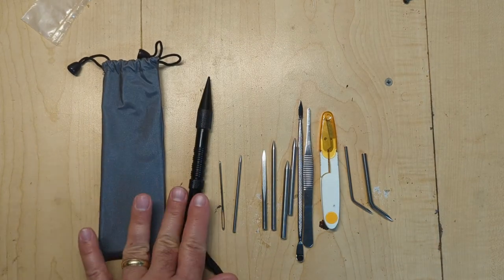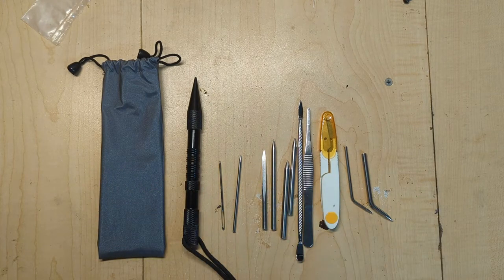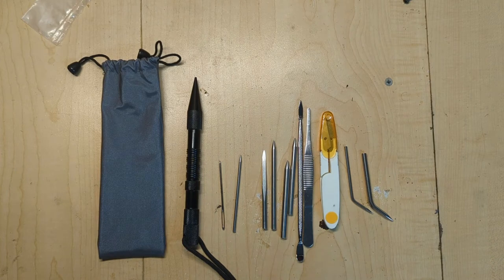They come with this bag, they have the Marlin Spike, they have a set of fids, and then they might have some other tools. So let's talk about them.